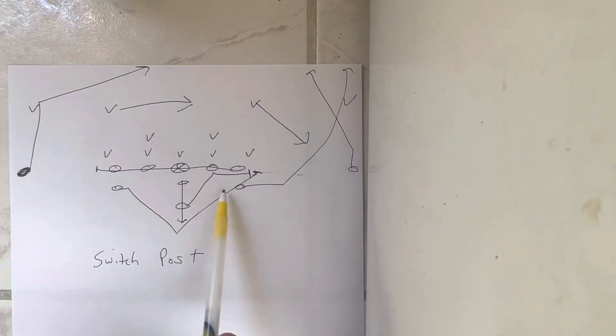The B back touches the guard, flattens out. He's got the first guy from the B gap out while the line slides away from the call.